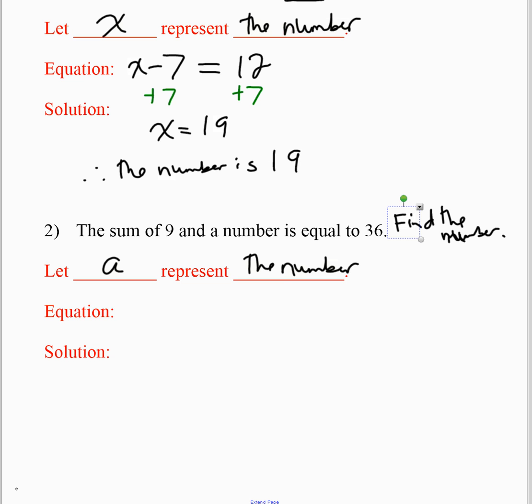So how do I say the sum of nine and the number? Well, the word sum means to add. So that means a plus nine is, or is equal to means an equal sign, and then 36.